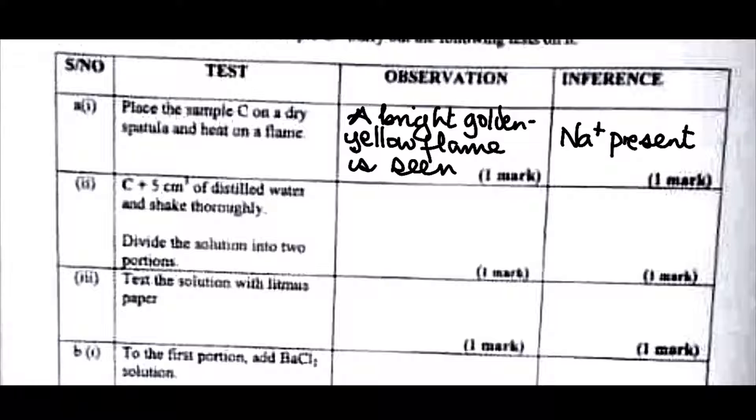Very straightforward and your two marks. Now C plus 5 cm³ of distilled water, shake thoroughly. C is a sodium salt and all sodium salts are soluble, even though it is a trioxocarbonate(IV) which are mostly insoluble. But because it's sodium trioxocarbonate(IV), it is soluble because all sodium salts are soluble. So this is a solubility test. C dissolves completely to give a colorless solution, not a colorless precipitate, because you cannot have something that dissolves giving you precipitate at the same time.